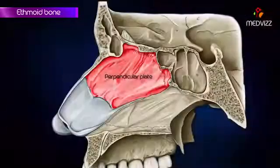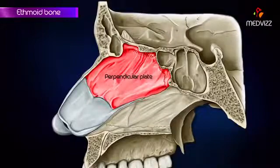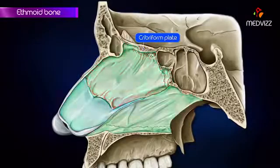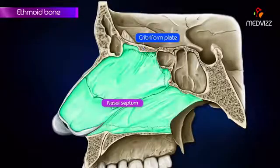The perpendicular plate is a quadrilateral plate which projects downwards from the inferior surface of the cribriform plate. It forms the upper part of the nasal septum.